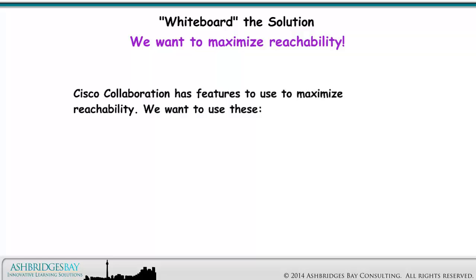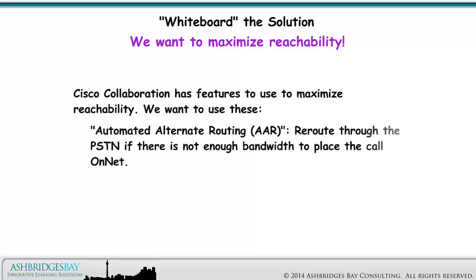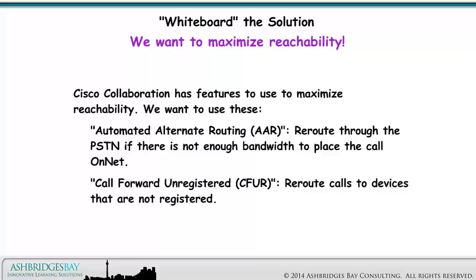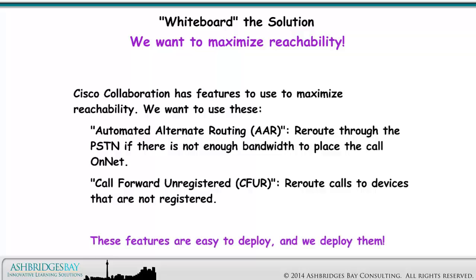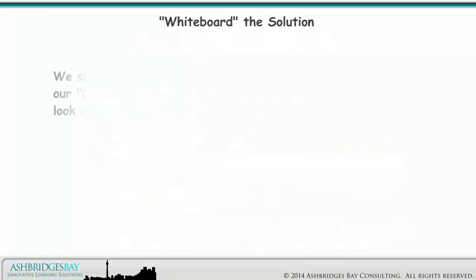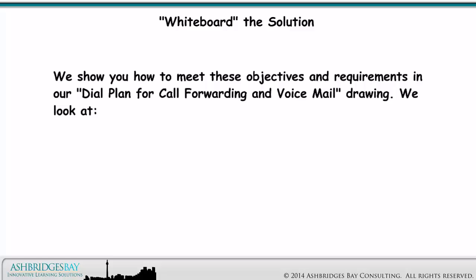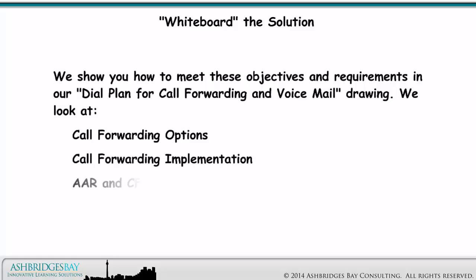Cisco collaboration has features to use to maximize reachability, and we want to use these. Automated Alternate Routing — AAR: reroute through the PSTN if there is not enough bandwidth to place the call on-net. And Call Forward Unregistered — CFUR: reroute calls to devices that are not registered. These features are easy to deploy, and we deploy them. We show you how to meet these objectives and requirements in our dial plan for call forwarding and voicemail drawing. We look at call forwarding options, call forwarding implementation, AAR and CFUR, and a dial plan for voicemail integration.